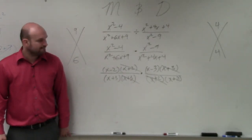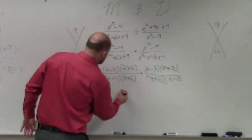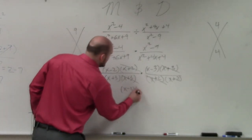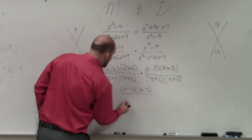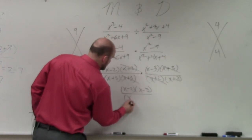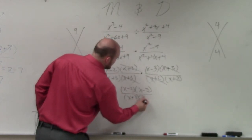You guys see? Yep. So now, that's everything that's left over. So I have x minus 2 times x minus 3 divided by x plus 3 times x plus 2.